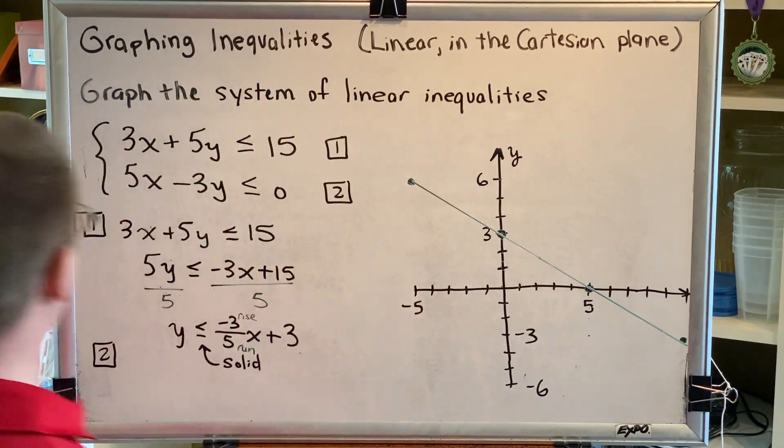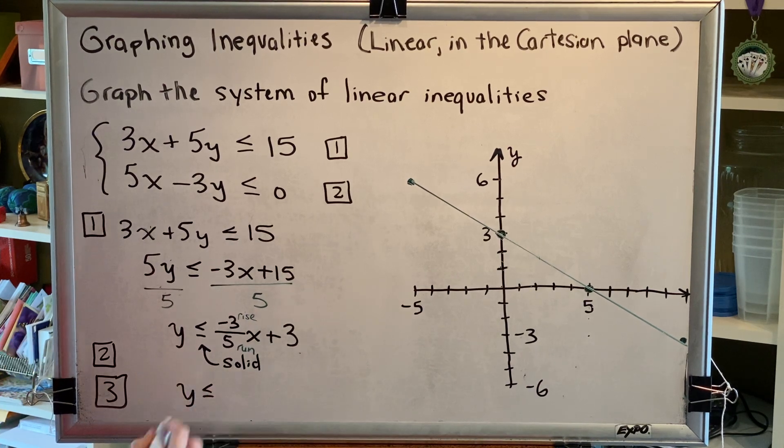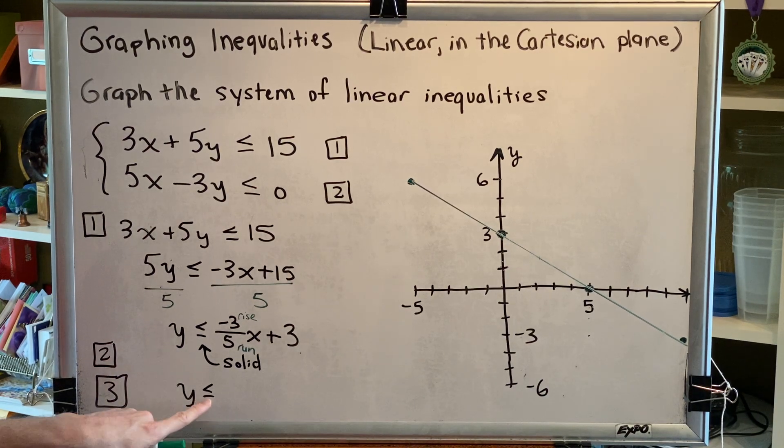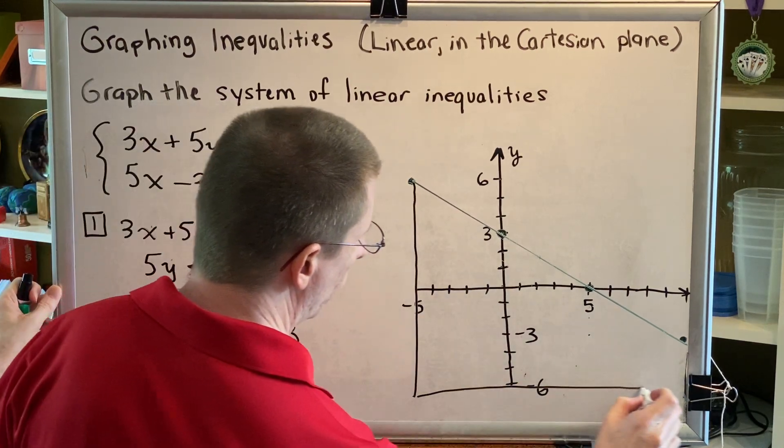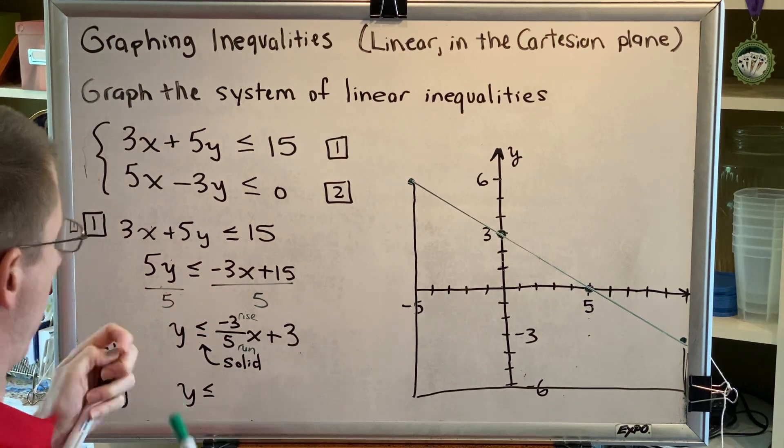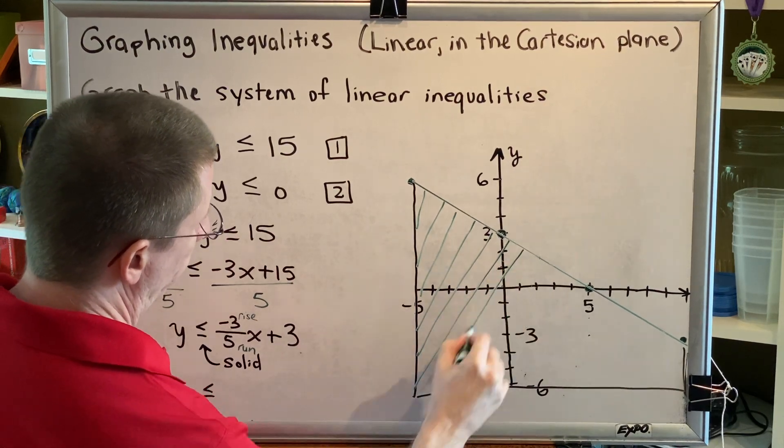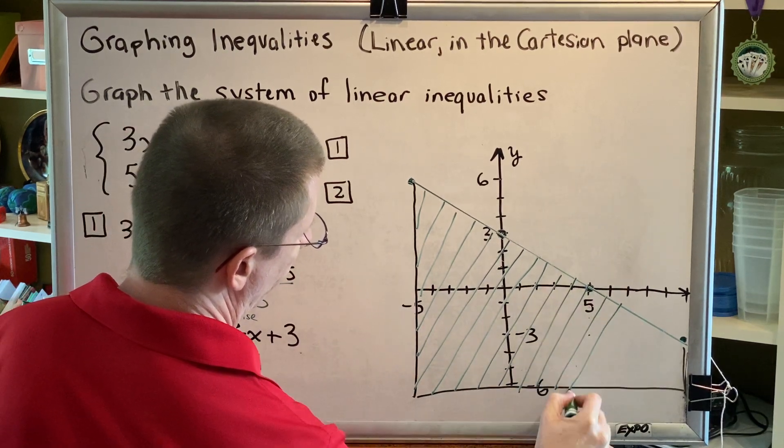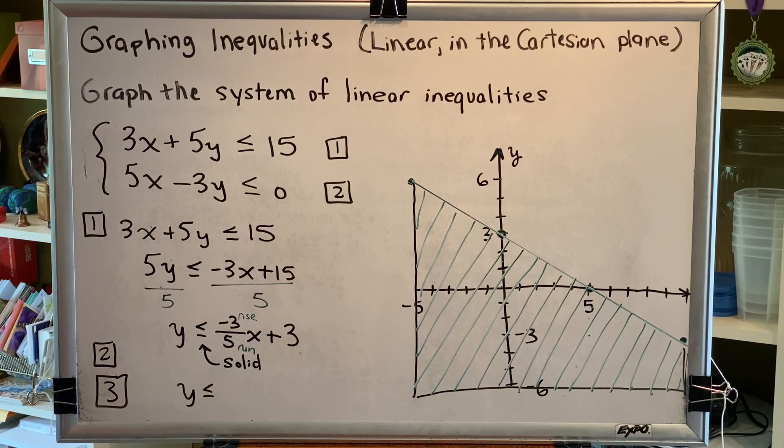That was step 2. Step 3 is the shading step. Our inequality at the end of step 1 started with y is less than or equal to, so this tells me how to shade. The variable is y, so my two choices are up or down. Because it says less than, we're going to shade down. That is our first inequality.